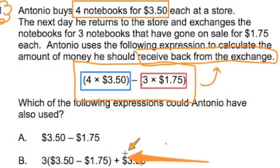These expressions or these number sense expressions or algebra expressions can be very abstract. But if you know that $3.50 represents the cost of one notebook and you know that $3.50 minus $1.75 represents the difference, the money back from one notebook, you can start answering these questions. Now let's start answering it.